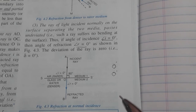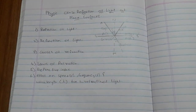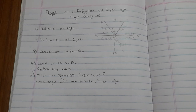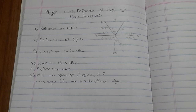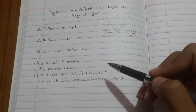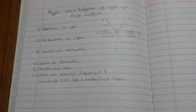Now we will learn about the causes of refraction. When a ray of light passes from one medium to another, its direction changes because there is a change in speed. When there is a change in the speed of light, there is also a change in direction. If light slows down, it bends towards the normal; if it speeds up, it bends away from the normal.